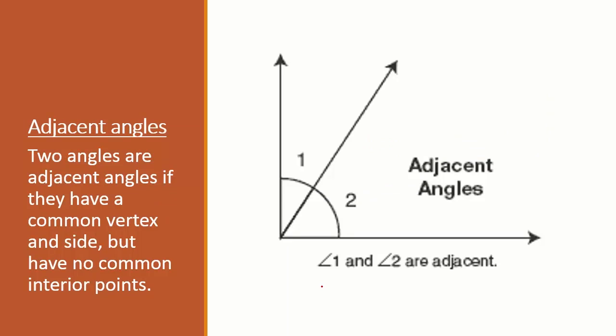Adjacent angle. Two angles are adjacent angles if they have a common vertex and side but have no common interior point. In this image over here, angle one and angle two are adjacent because they have common sides. But you can see that any of the points inside angle two is not shared with any of the points in angle one.